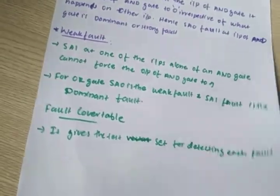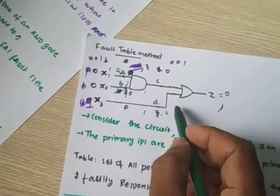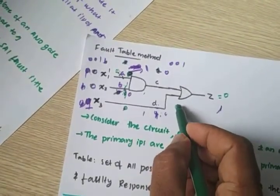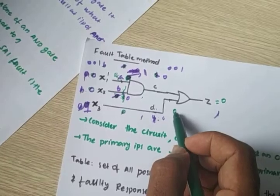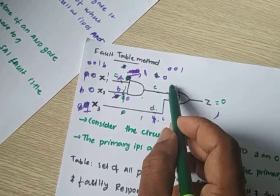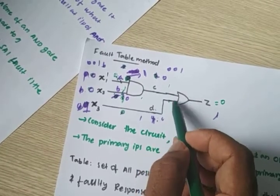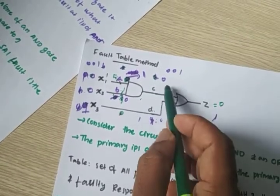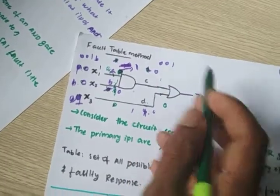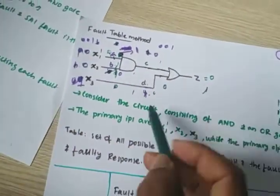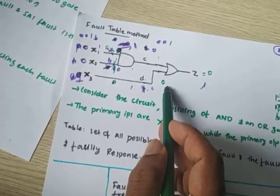Now consider for OR gate. If stuck-at-0 is at one input of an OR gate, what happens? If 1 comes at the other input, output is 1. If 0 comes, output is 0. So stuck-at-0 at the input of an OR gate cannot control the output — it always depends on the other input. So here, SA0 is the weak fault.